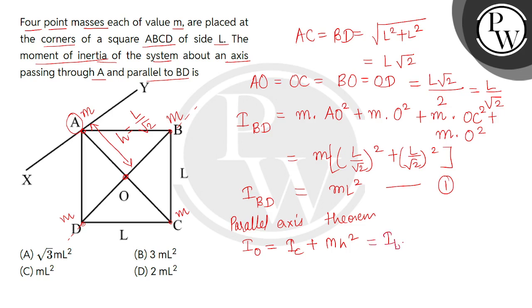So we will put the values. We will write this as I_BD plus, in place of mass, the mass of 4 particles will come, that is 4M, and in place of H comes L divided by square root 2 whole bracket square.